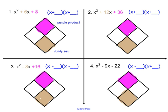To start out, looking at our first problem here, I notice that I need a product of 8 and a sum of 6. So the purple product is 8, sandy sum is 6. I'm looking for two numbers that multiply to 8 that add up to 6. In this case, the numbers are 2 and 4. 2 times 4 is 8, 2 plus 4 is 6. So my final factored form would be x plus 2 times x plus 4. You could then use FOIL to double-check to make sure that is the correct solution.